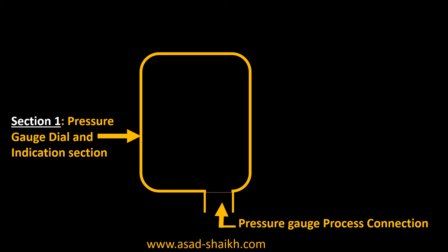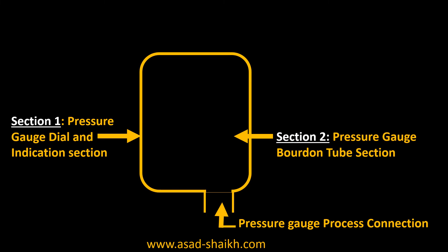Here is section 2, where you have the Bourdon tube, where the process fluid enters the Bourdon tube and displaces it, such that through the mechanical linkage we get to know the pressure.